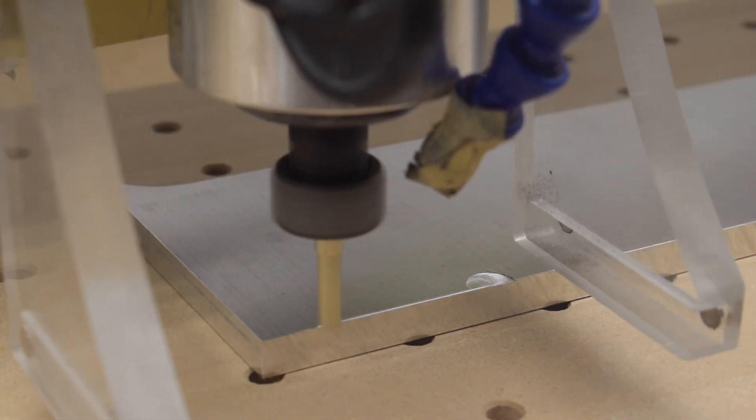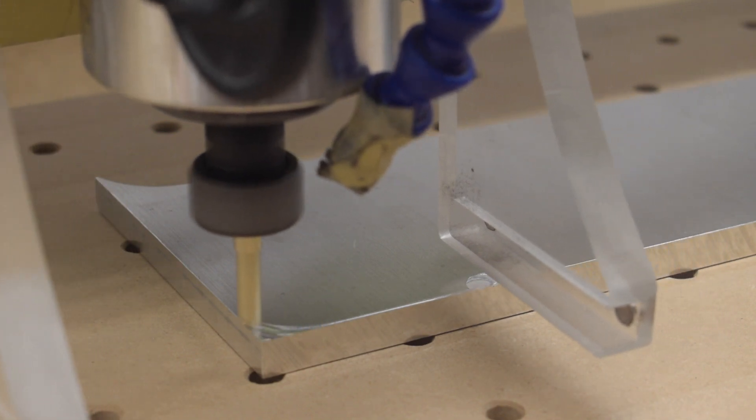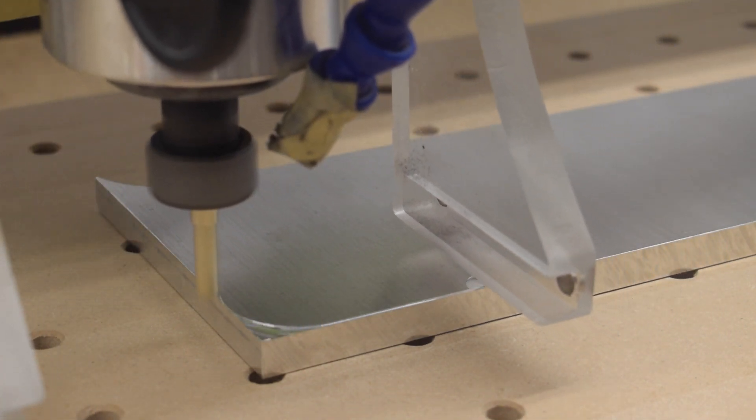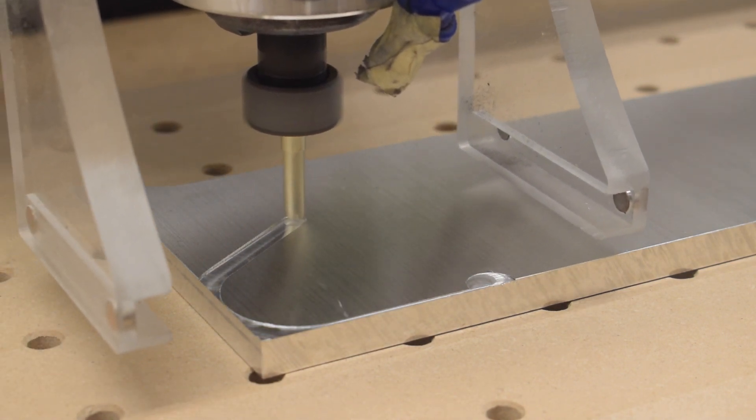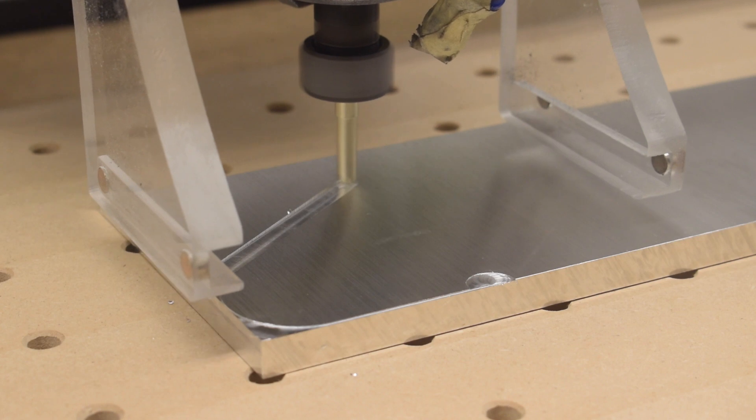When you're running a high-speed spindle or router, there comes a point where you can't sustain optimal cutting parameters. It could be that you can't feed fast enough to push your end mill into fresh material, or you don't have the torque or rigidity to feed as fast as you need to.